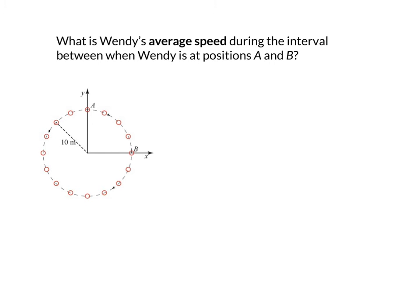So now let's suppose we're asked, what is Wendy's average speed during the time interval between when she is at point A and when she's at point B? Well, we just have to recall the definition of average speed. Average speed is, by definition, just the distance traveled divided by the time interval over which that distance is traveled.